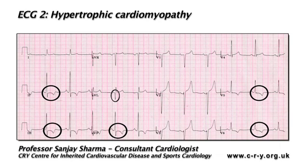The following abnormalities on the ECG should raise the suspicion of pathology in an athlete: ST segment depression; T wave inversions in any lead other than V1, AVR, or lead 3; pathological Q waves; and left axis deviation in combination with left atrial enlargement and left bundle branch block.